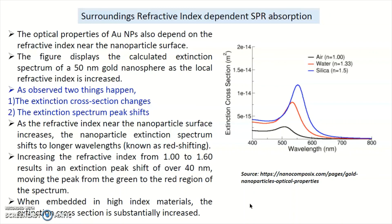This is how you can understand: whenever you look at these kinds of graphs, you have to immediately realize how the contribution of absorption and scattering changes. The optical properties of gold nanoparticles also depend on the refractive index near the nanoparticle surface — we also took this into account in the Mie theory conditions, where we used the dielectric constants of the media. The figure displays the calculated extinction spectra of a 50 nanometer gold nanosphere.